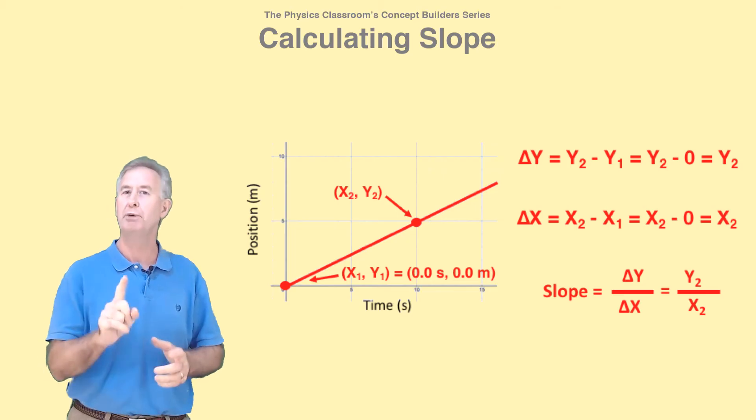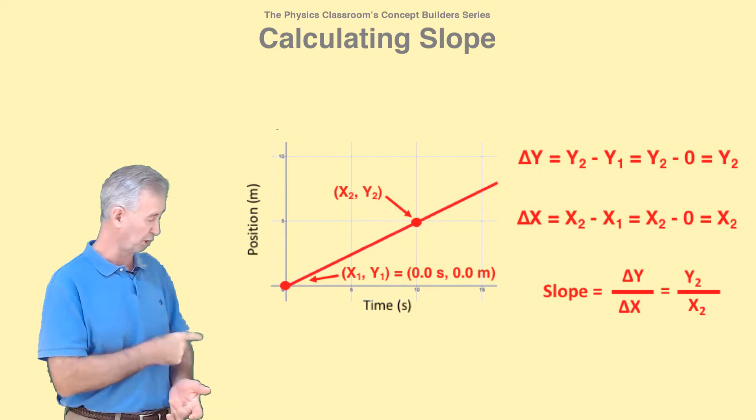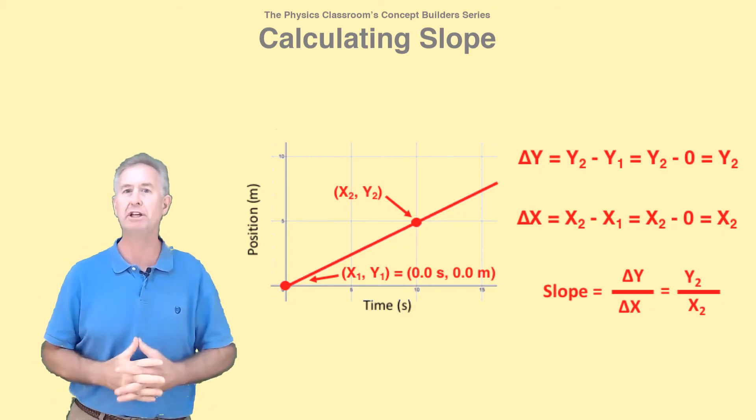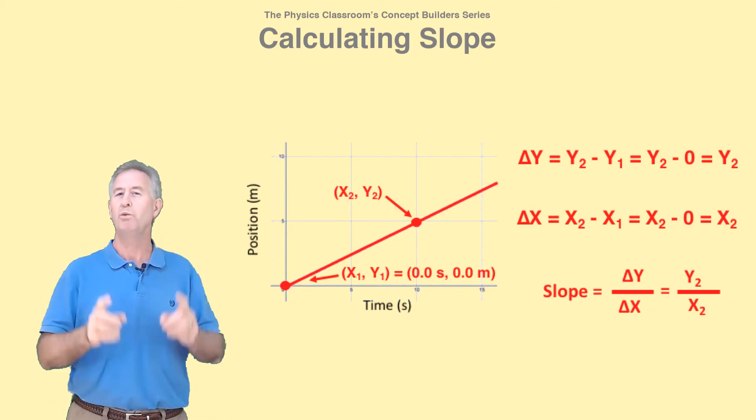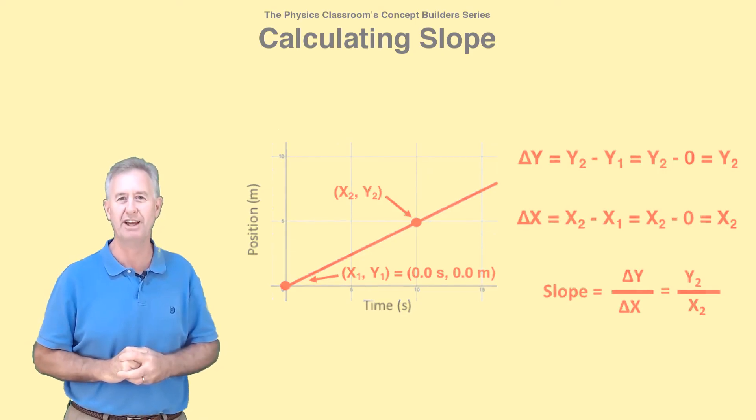That was simple. But do be careful, because just because this y2 divided by x2 trick works for this graph, doesn't mean it works for every graph. What always works is slope equal change in y divided by change in x.